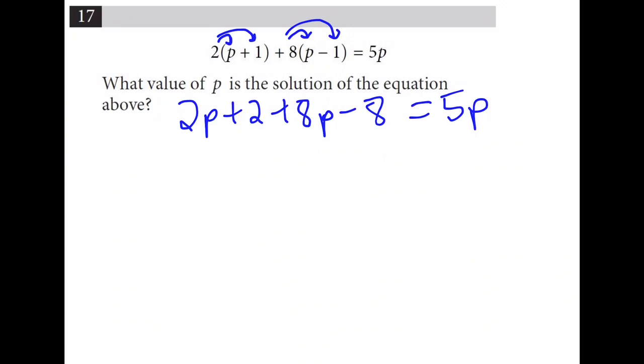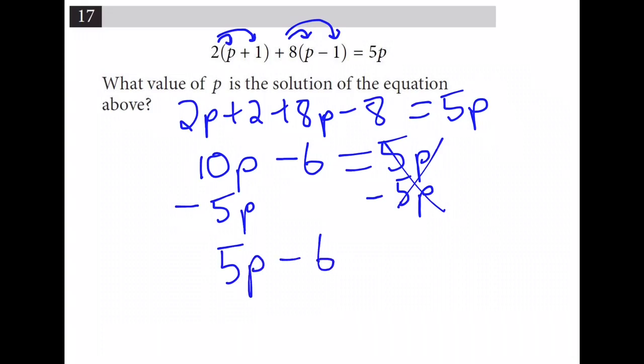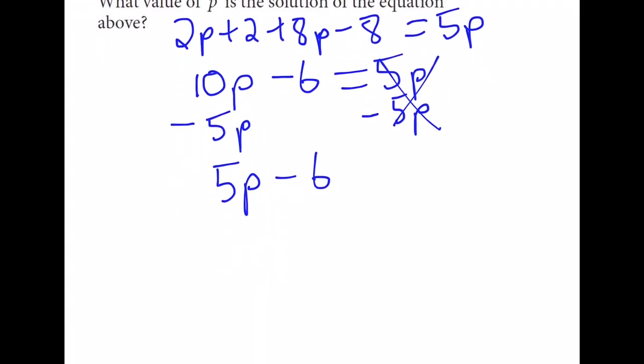The next step is to combine the like terms. 2p plus 8p is equal to 10p. And 2 minus 8 gives us negative 6. I'm going to add all the numbers to the right side of the equation and subtract all the p's to the left side. Often times what happens is students will get to this step to cancel out their 5p. And they will have 5p minus 6 and they don't know where to go from there.